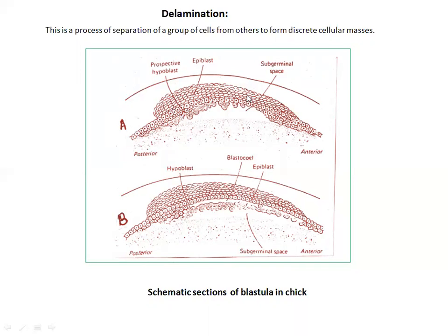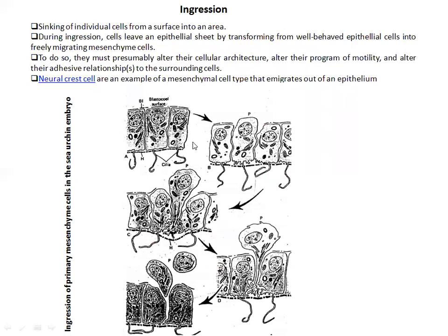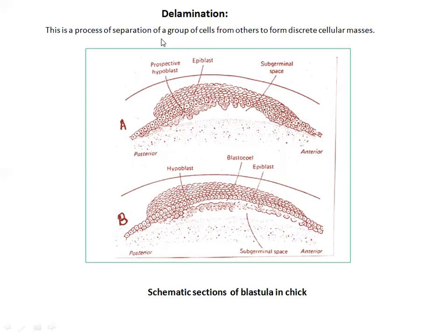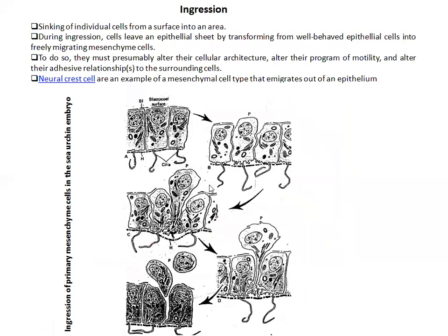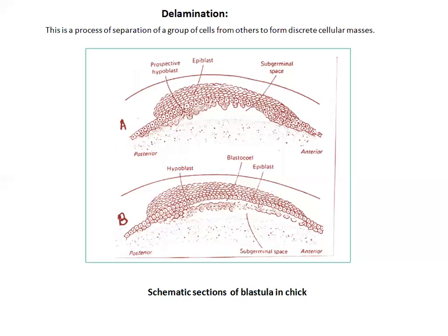Within an egg we have two basic regions: the animal pole and the vegetal pole. Delamination is the process of separation of a group of cells — not a single cell, but a group. The epiblast is a region involved. There is a basic similarity between delamination and ingression, which is the dissociation of cells.